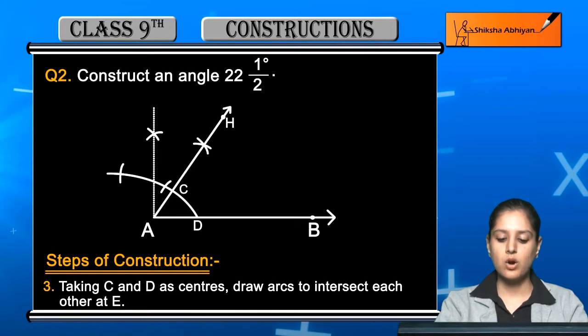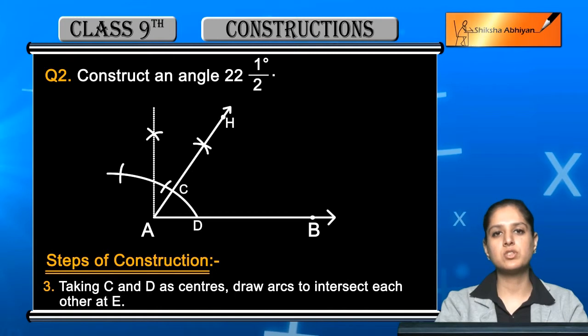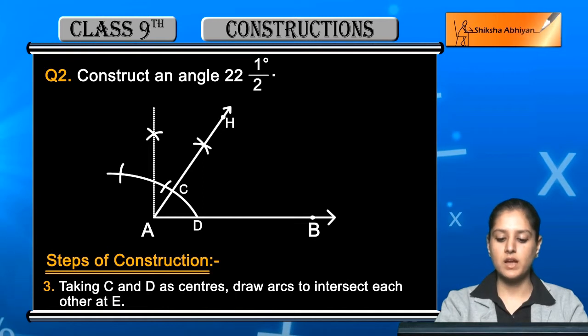Open your compass to a convenient radius, approximately more than half of CD. Taking C and D as centers with radius more than half of CD, draw arcs intersecting each other at E.